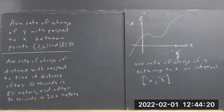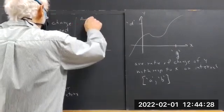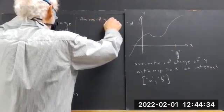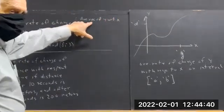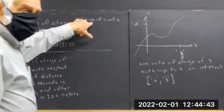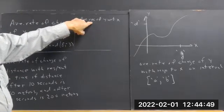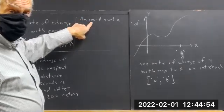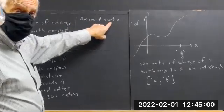Average ROC stands for rate of change — maybe the most important concept in mathematics. It's the basis of calculus and everything that follows calculus. So, the average rate of change of Y with respect to X. WRT stands for 'with respect to.'